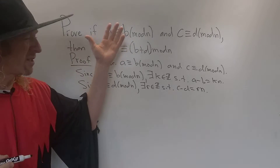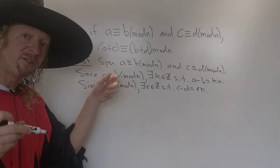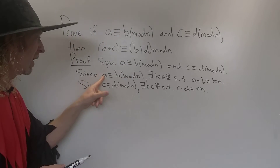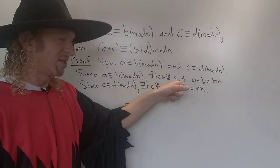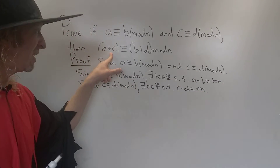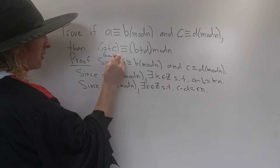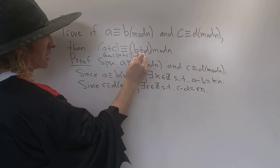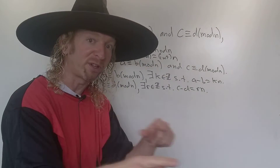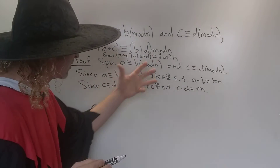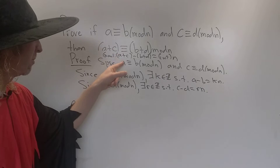So we're trying to prove that if the hypotheses are true, then the conclusion is true. We write down what each hypothesis means: A congruent to B modulo N means A minus B is a multiple of N; C congruent to D modulo N means C minus D is a multiple of N. The goal is to show that A plus C minus (B plus D) is a multiple of N. The natural thing to do is add these two equations — that should get us there.